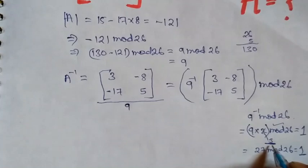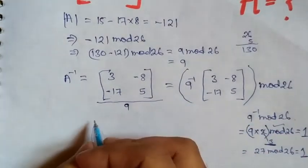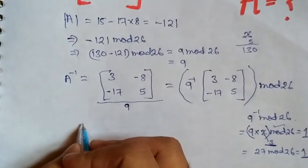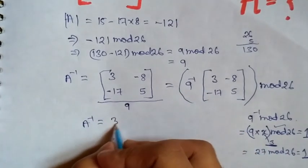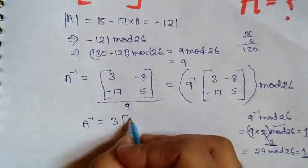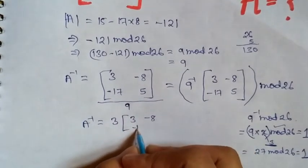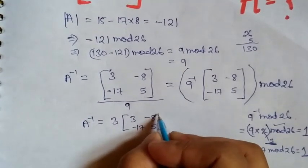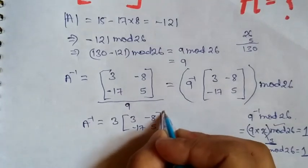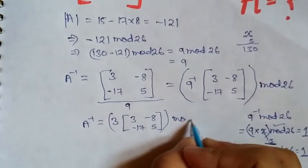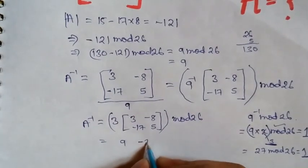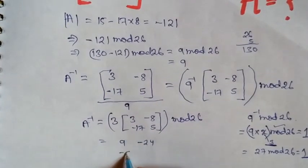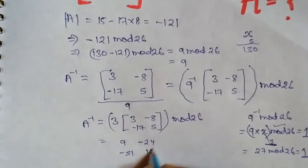So now A inverse equals to 3 times the matrix 3, minus 8, minus 17, 5 mod 26. Multiply it: 9, minus 24, minus 51, 15 mod 26.